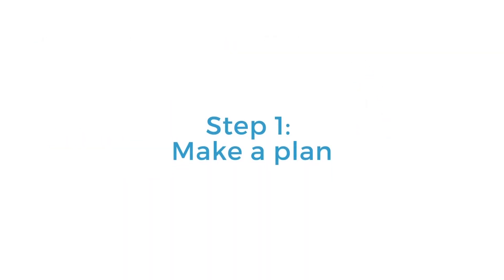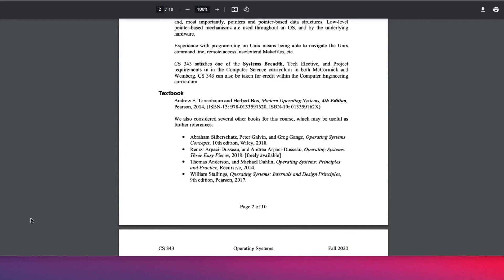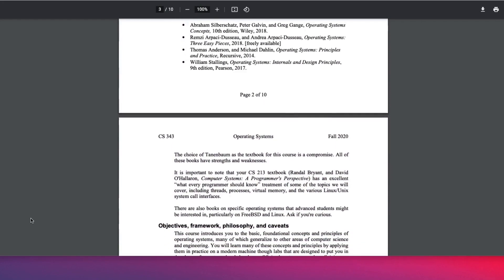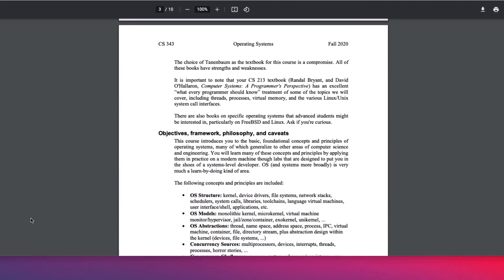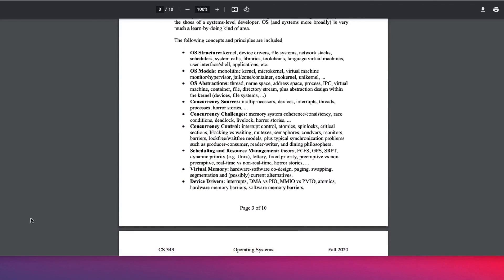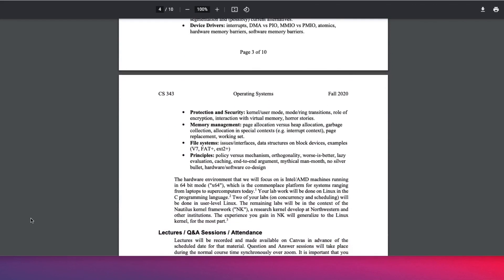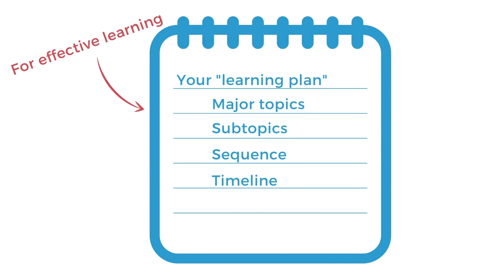The first step to teaching yourself is that you need to make a plan. Think about when you are taking a university course or a high school course. On the first day of each course, you always receive a syllabus that outlines exactly what you'll be learning that semester and what the timeline would look like. And so when you're teaching yourself, you want to do the exact same thing. You need to determine what are the topics you need to learn, what are the subtopics you need to master, as well as in what sequence and timing you should teach these concepts to yourself.